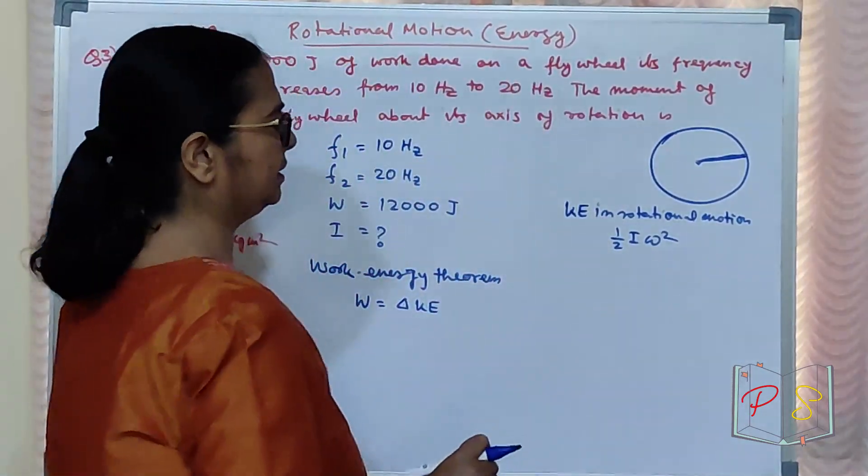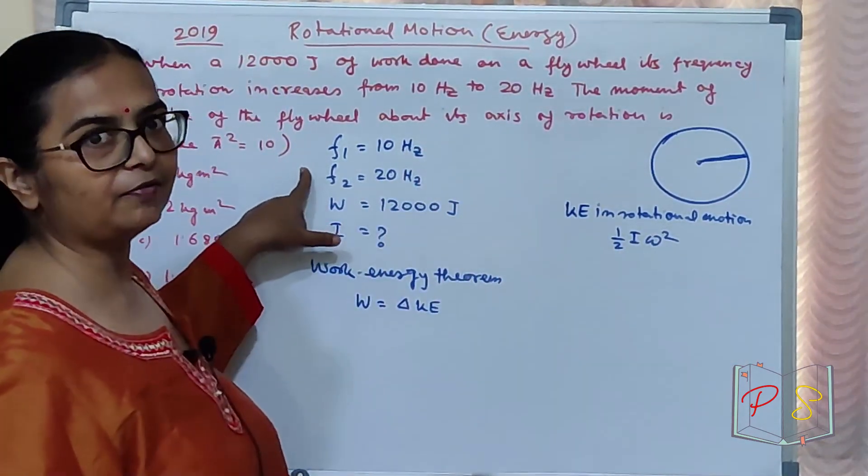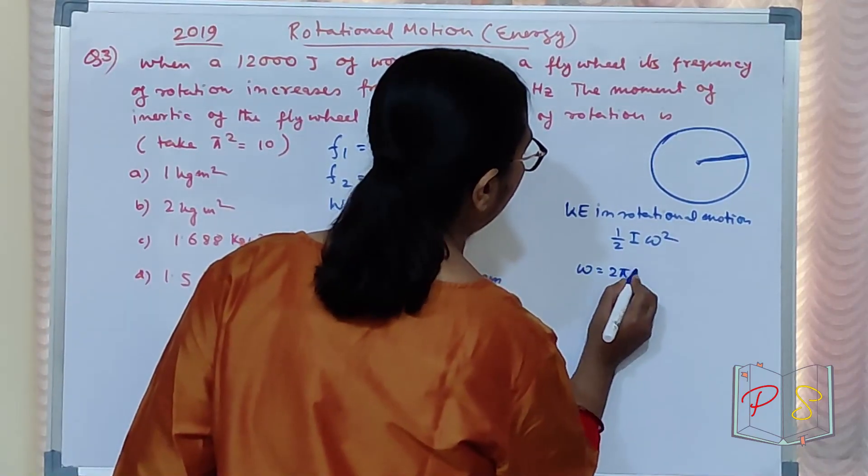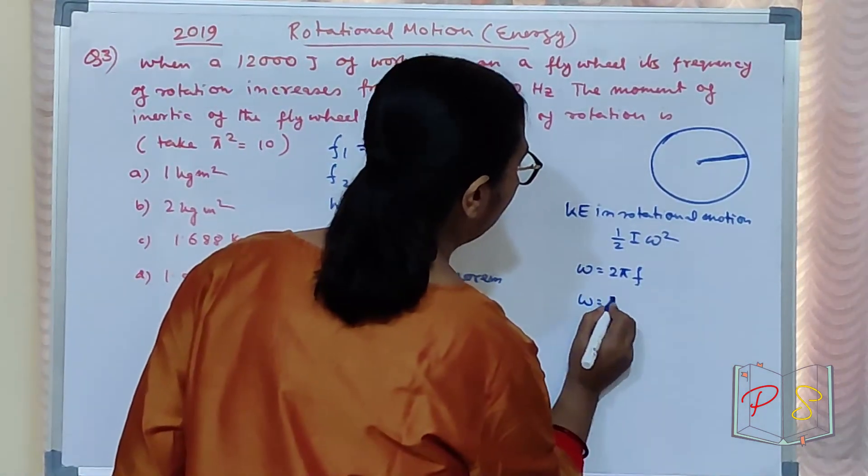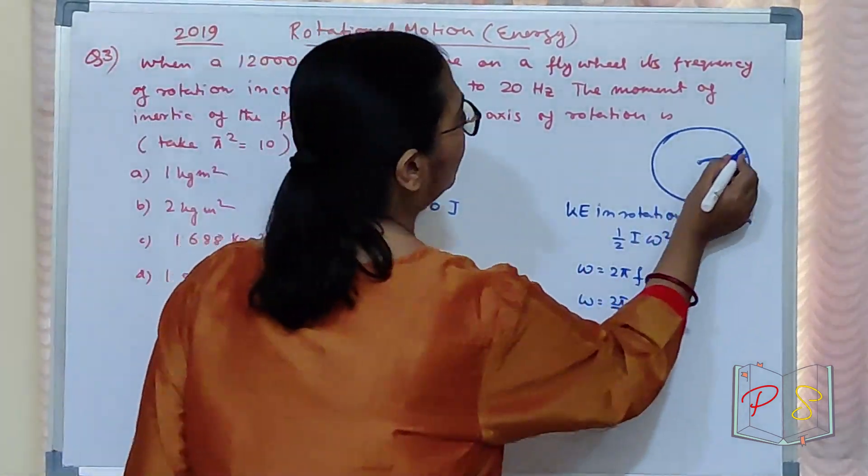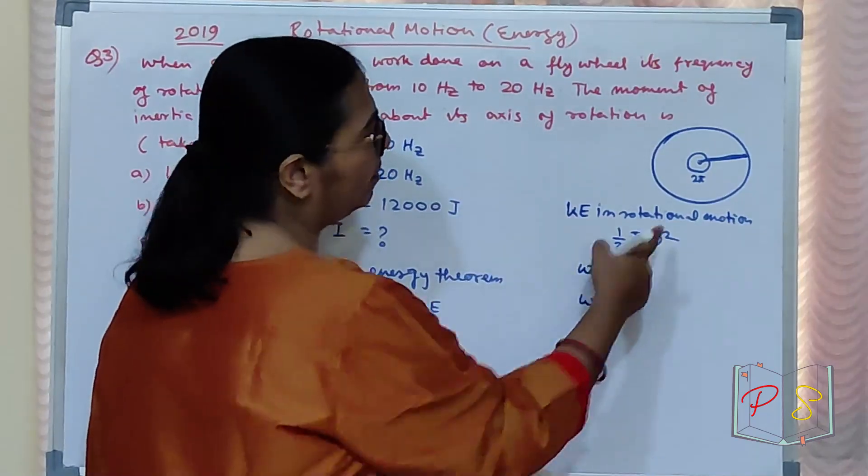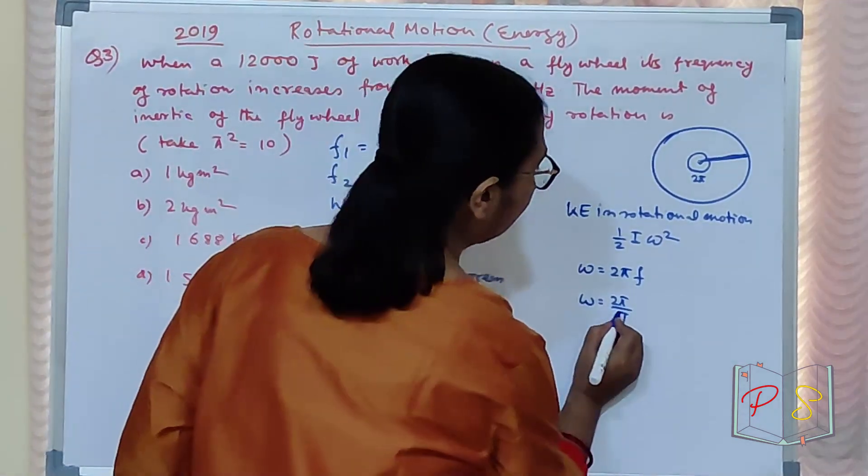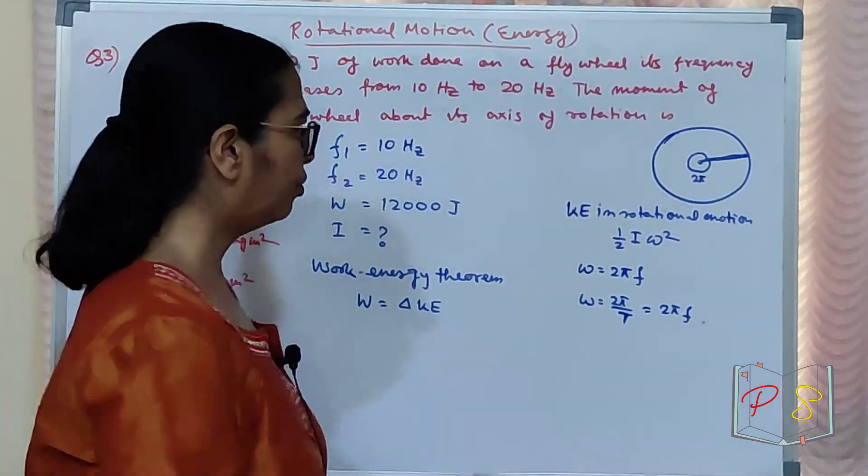Isko omega in terms of F de diya. Batau omega aur F mein kya relation hai? Omega equal to 2 pi F. Correct kiya? Pata nahi. Ek baar check karle. Omega kya hota hai? 2 pi by capital T. Omega 2 pi is the full circle. Full circle ghumega toh 2 pi ghumta hai. 2 pi is angular displacement divided by time period. Ek baar ghumne ke liye kitna time laga? Time period is omega. T and T is 1 upon F. F to 2 pi F. Tumne nikal diya. Omega equal to 2 pi F.